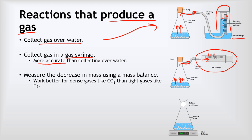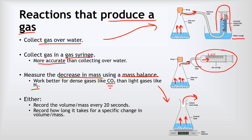Our final method is to measure the decrease in mass using a mass balance. The reaction takes place in a conical flask resting on a balance, and as the gas bubbles away it leaves the container entirely, so the balance can no longer record its mass. This works much better for dense gases like carbon dioxide than for low-density gases like hydrogen — with hydrogen the readings are very tiny and the balance struggles to measure such small changes. With all these methods, we can either record the volume or mass every 20 seconds, or record how long it takes for a specific amount of change to happen — for example, how long it takes for the mass to go down by 1 gram, or to collect 50 cm³ of gas.